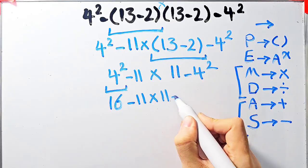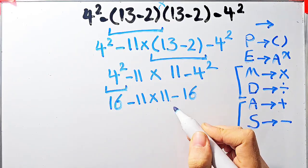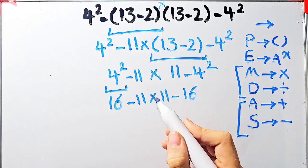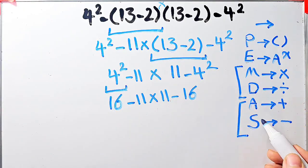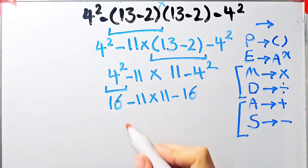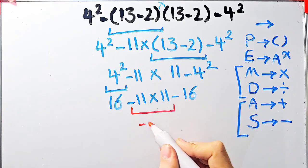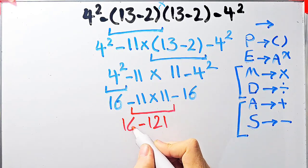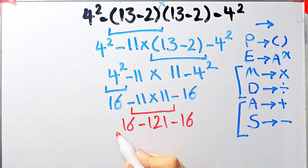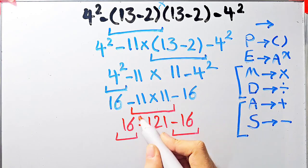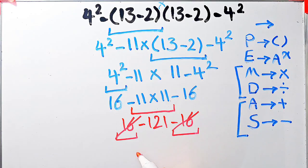We have subtraction and multiplication. First we do the multiplication because multiplication has higher priority than subtraction: negative 11 times 11 equals negative 121. Now we have 16 minus 121, then minus 16. Simplifying, the final answer of this question equals negative 121.